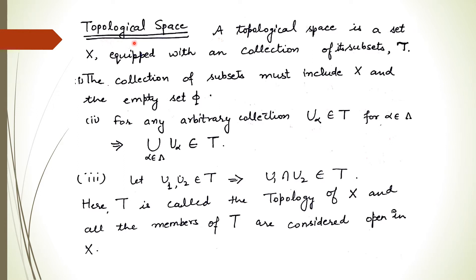First, I am going to explain what we mean by a topological space. A topological space is a set X equipped with a collection of its subsets, denoted by T. This collection must contain the whole set X and the empty set. If there are some members, their union must belong to T, and their finite intersection must also belong to T. This collection is the topology of X, and the set X together with this topology is called the topological space.